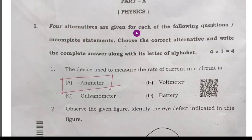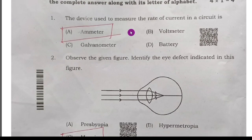Part A, Physics: Four alternatives are given for each of the following questions or incomplete statements. Choose the correct alternative and write the complete answer along with its letter of alphabet. First question: the device used to measure the rate of current in a circuit is option A, ammeter, is the right answer.